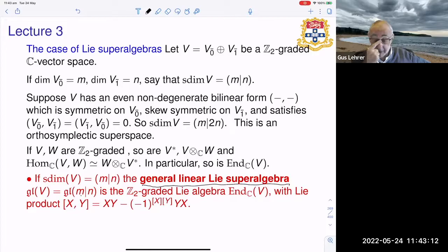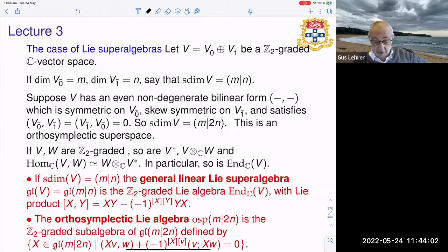And it is the Z_2 graded Lie algebra End(V) with Lie product given by a small twist of the usual Lie product. So you multiply the parities together. In particular, if you have an even element and an odd element, the parity you get a zero here.